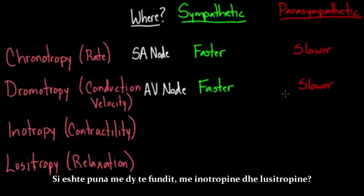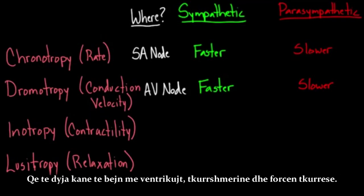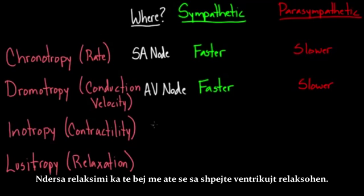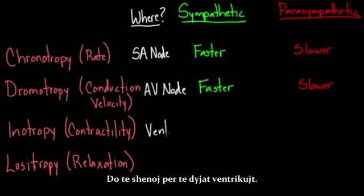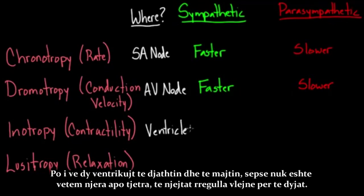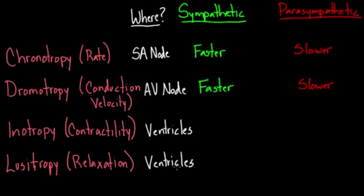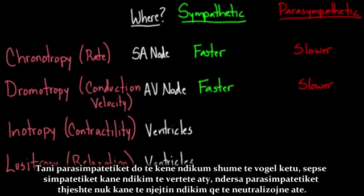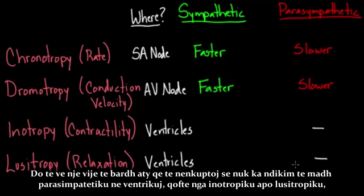Inotropy and lucitropy both have to do with the ventricles — both left and right, since the same rules apply to both sides. Parasympathetics have very little effect here. Sympathetics affect the ventricles, but the parasympathetics simply don't have a similar effect to counterbalance them, so there's no major parasympathetic effect on either inotropy or lucitropy from a ventricle standpoint.